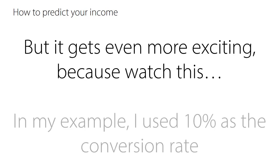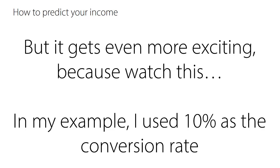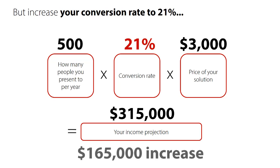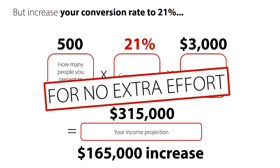But it gets even more exciting. In my example, I used 10% as the conversion rate, which is the average you should expect. But increase your conversion rate to 21% — which is what I teach people how to do. If you increase it to just 21%, with nothing else changing — not the number of people you speak to, not the price of your program — just increase your conversion rate from 10% to 21%, which is really easy to do with some of my techniques. Your income projection now goes to $315,000. That's a $165,000 increase in income for no extra effort. You're still doing the same presentation, selling the same product, you just have more people buying it. You've got yourself $165,000 more in the bank for no extra effort.